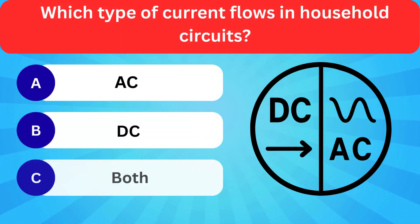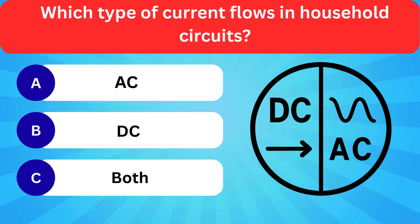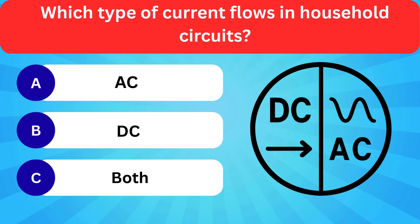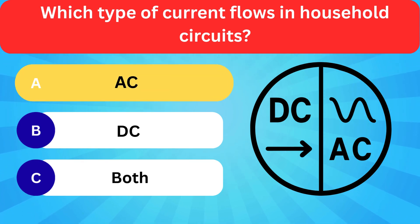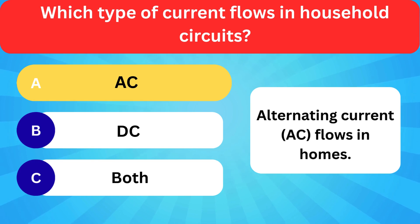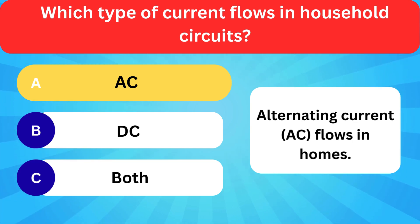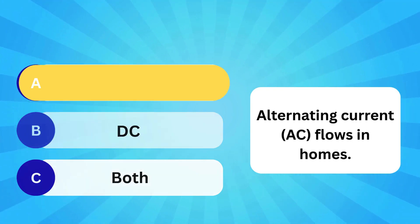Which type of current flows in household circuits? Options: AC, DC, Both. Correct answer is AC. Alternating current (AC) flows in homes.